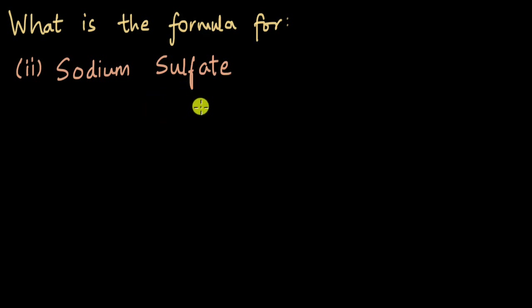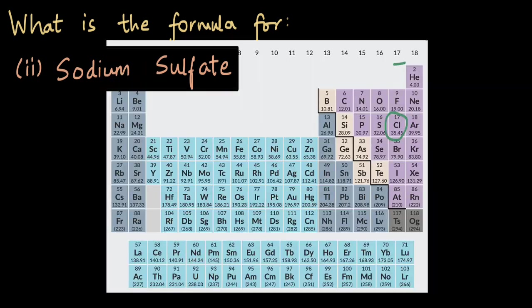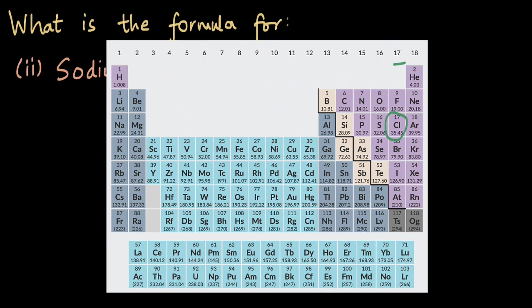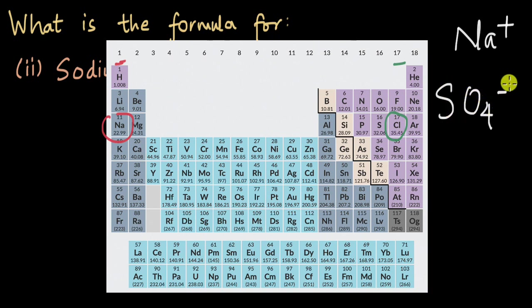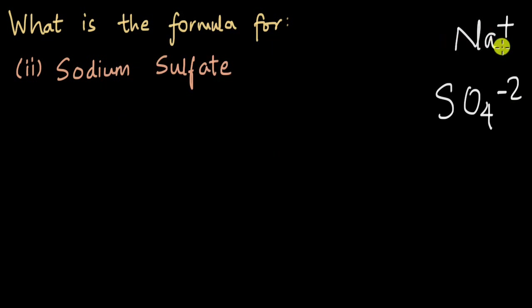Now we have sodium sulfate. Again, the total charge on the ionic compound has to be zero — total charge is charge from cations plus charge from anions. The cation is sodium. Looking at the periodic table, sodium lies in group 1, which means the sodium ion is Na⁺. The sulfate ion is SO₄²⁻, a polyatomic ion with a charge of negative two.